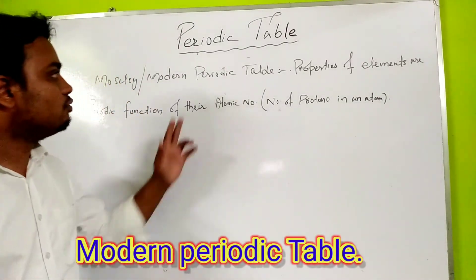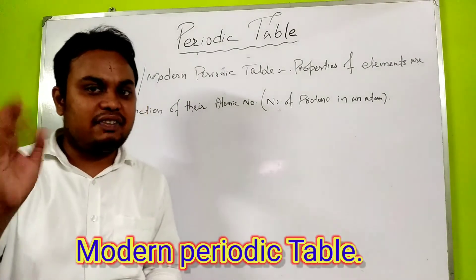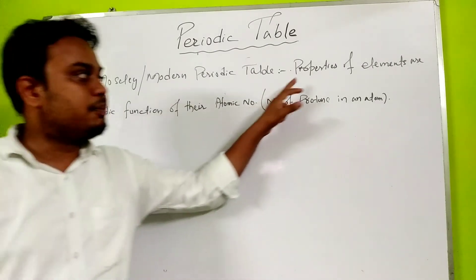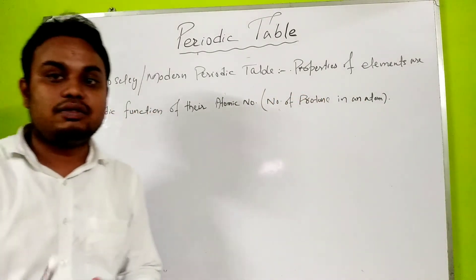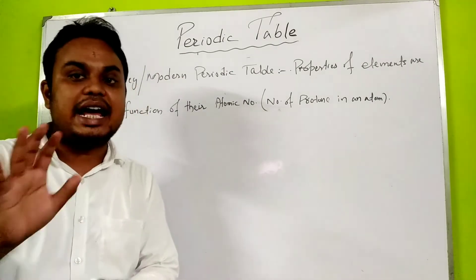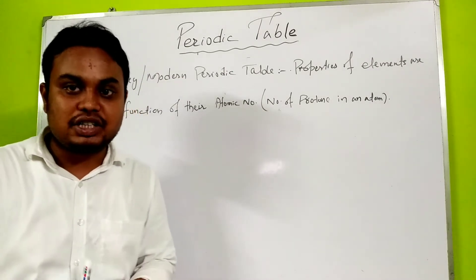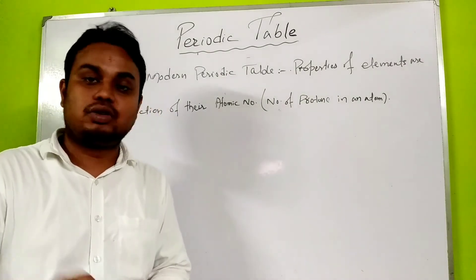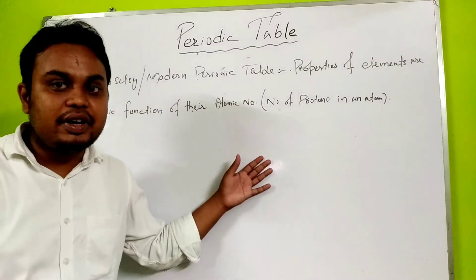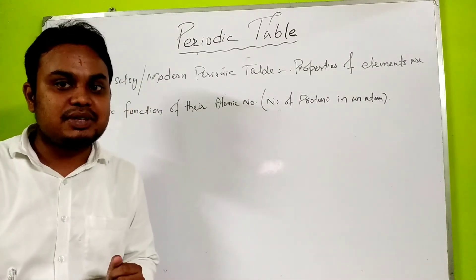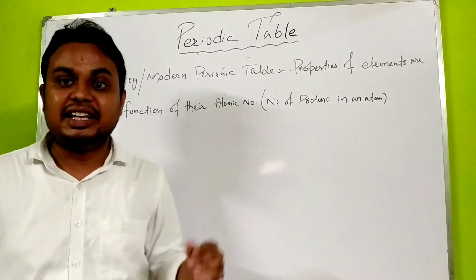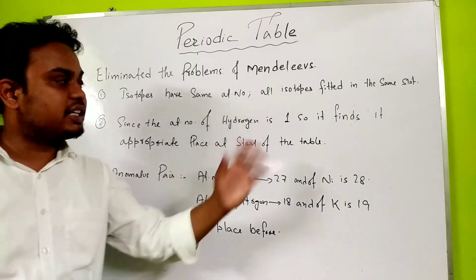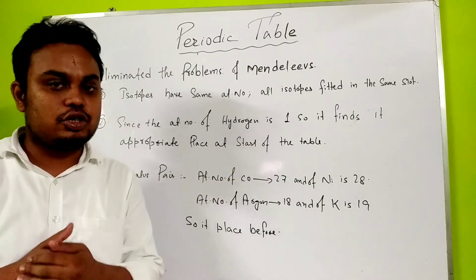After Mendeleev came scientist Moseley. Moseley said that the periodic properties of elements are periodic functions of their atomic number, not atomic weight or atomic mass. Atomic number is the number of protons in an atom. So the modern periodic table which we use today is based on atomic number in increasing order. Now, how did Moseley's periodic table solve Mendeleev's problems?